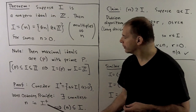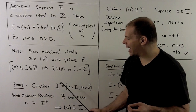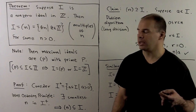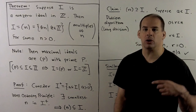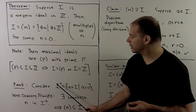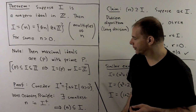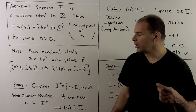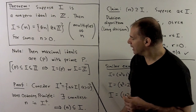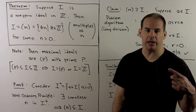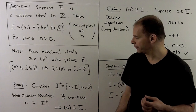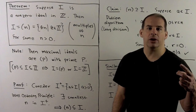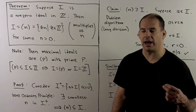For the proof, let's consider the set I+. This is going to be all positive elements in I. Because I is non-zero and closed under addition, I+ will be non-empty. We invoke the well-ordering principle for the natural numbers, which says this non-empty set has some smallest element. Let's call that n. Now n is in I+, which means it's in I, so the ideal generated by n is also contained in I.